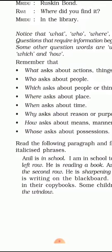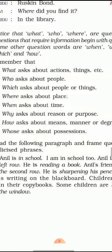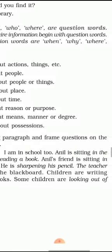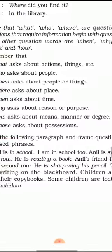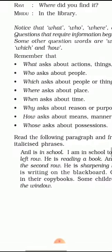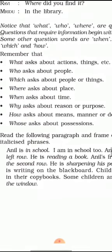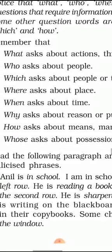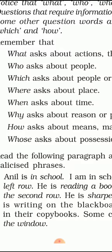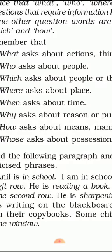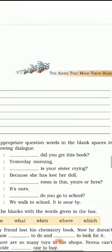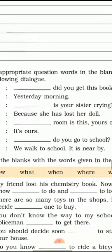Children are writing in their copy book. Question: What are children writing in? Where are children writing? Some children are looking out of the window — question: What are some children doing? So students, you have to learn this: What for action or things, Who asks about people, Which asks about people or things. Keep these in mind and learn them. Now we will take the next exercise.